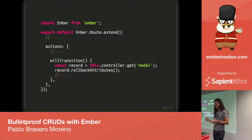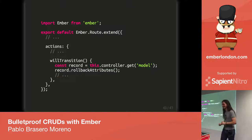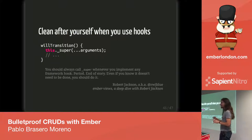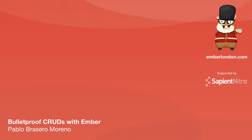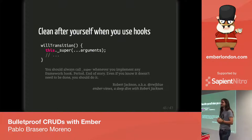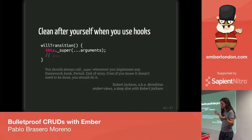So we've grabbed the record, undone the changes including dropping the record if it was new — and one last thing we really should be doing here is calling super, because we are using a framework hook. As Robert Jackson (rwj) says: you should always call super whenever you implement any framework hook, period, end of story. Even if you know it doesn't need to be done, you should do it — because you could be using a mixin that implements the same framework hook, and if you don't call super your mixin's hook won't be called.